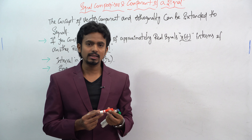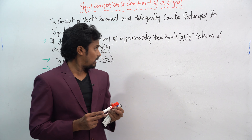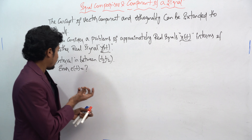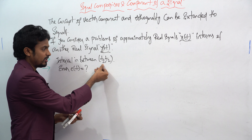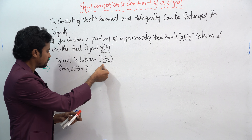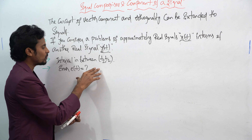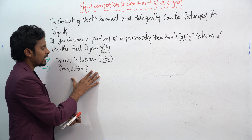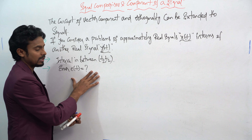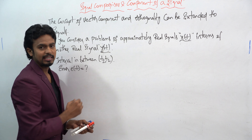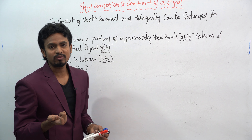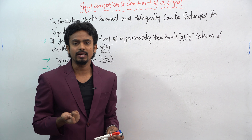How can we write this if we take the interval between t1 and t2? What would happen to the error signal e(t)? That will be the e of t, which we have to find.